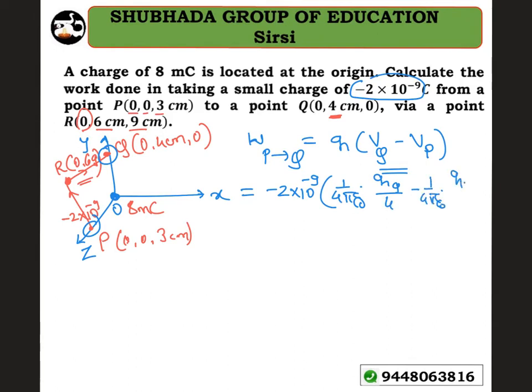The distance for point P is 3 centimeters and the distance for point Q is 4 centimeters, both in centimeters.